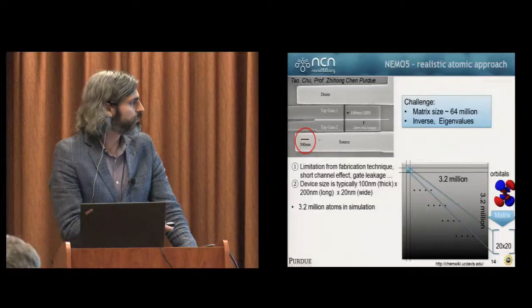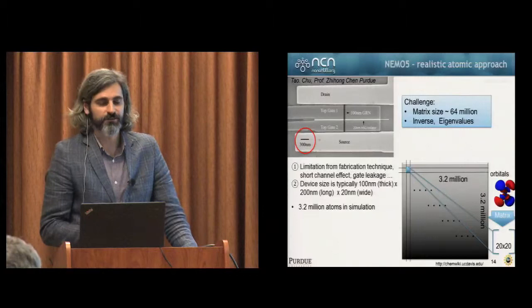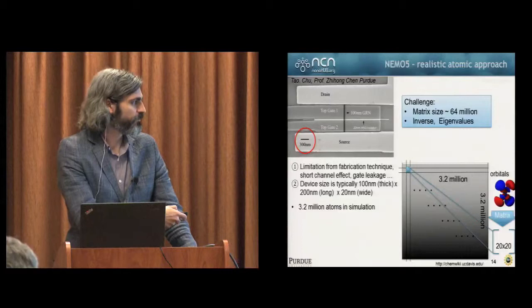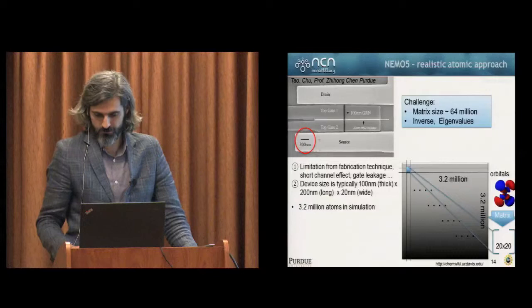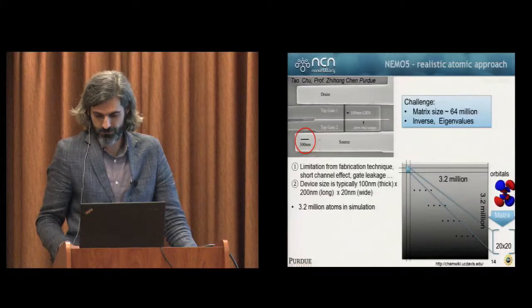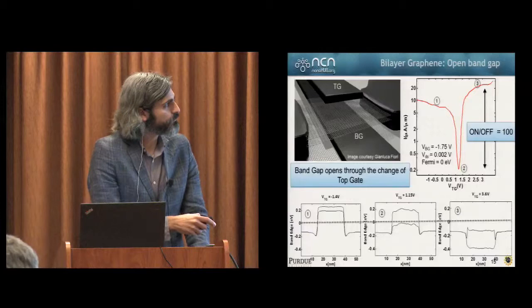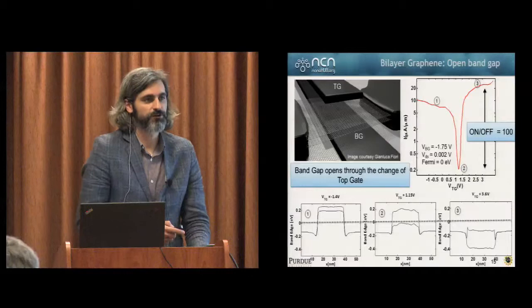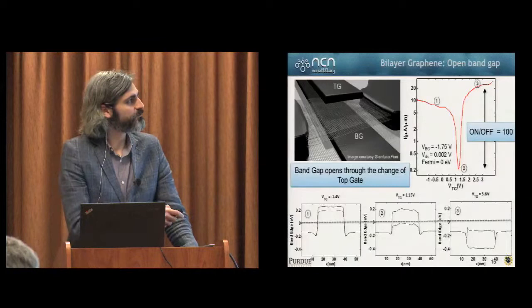This is probably the best slide as far as why we need Blue Waters. You're looking at a device size of 100 nanometers by 200 nanometers by 20 nanometers, with about 3.2 million atoms. You end up with a very large matrix size once you get that into the tight binding representation. Here we've been able to get up to an on-off current ratio of 100, which is still not very good as transistors are considered, but this is just the first work we've done on it.